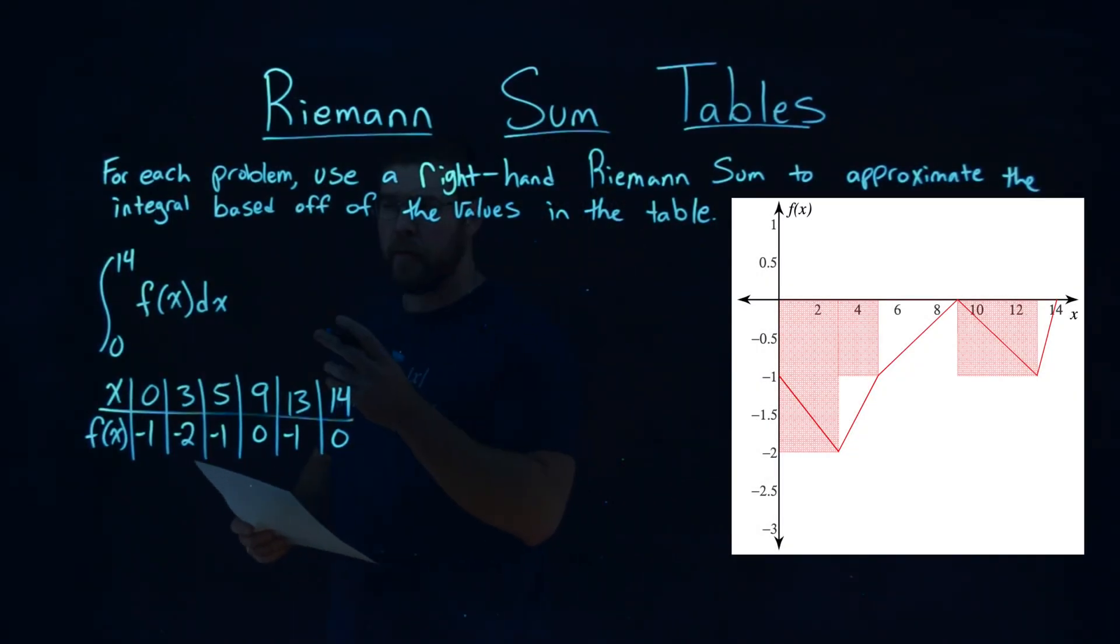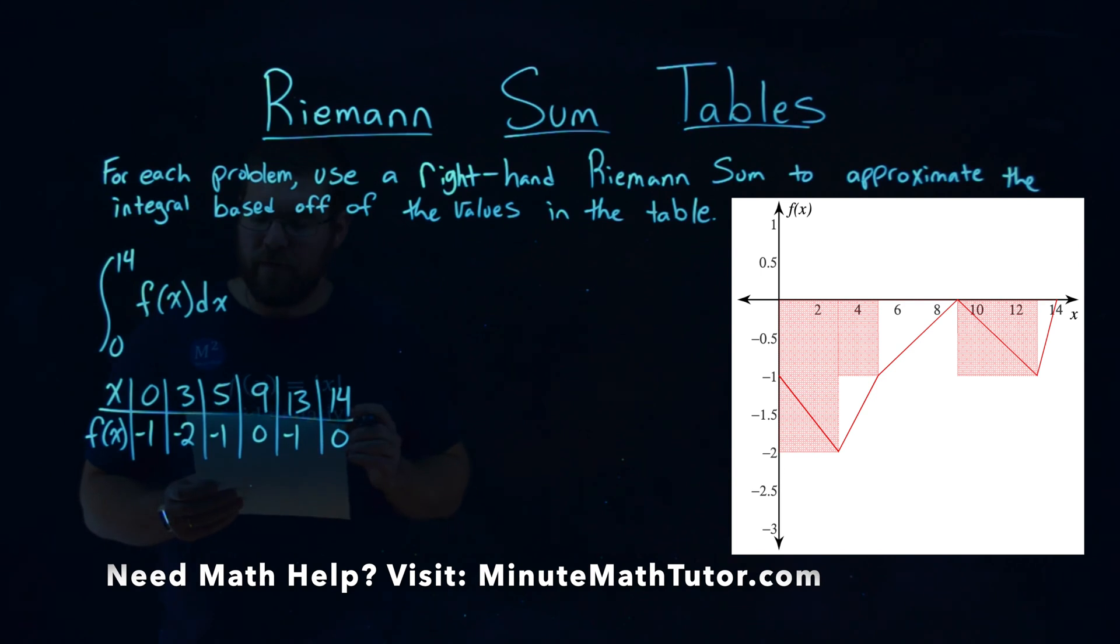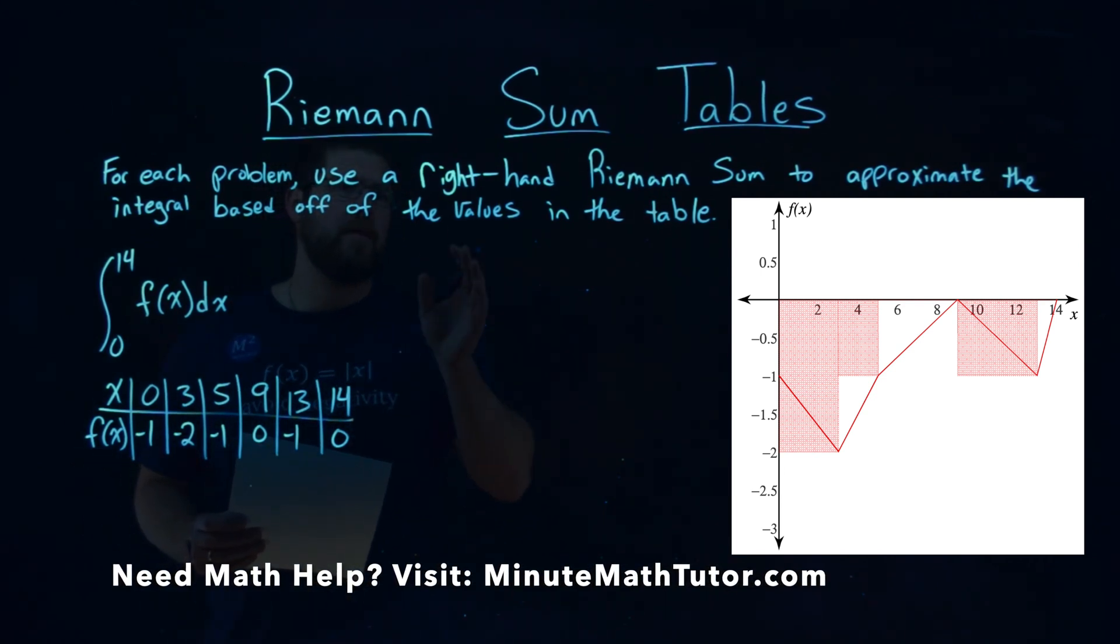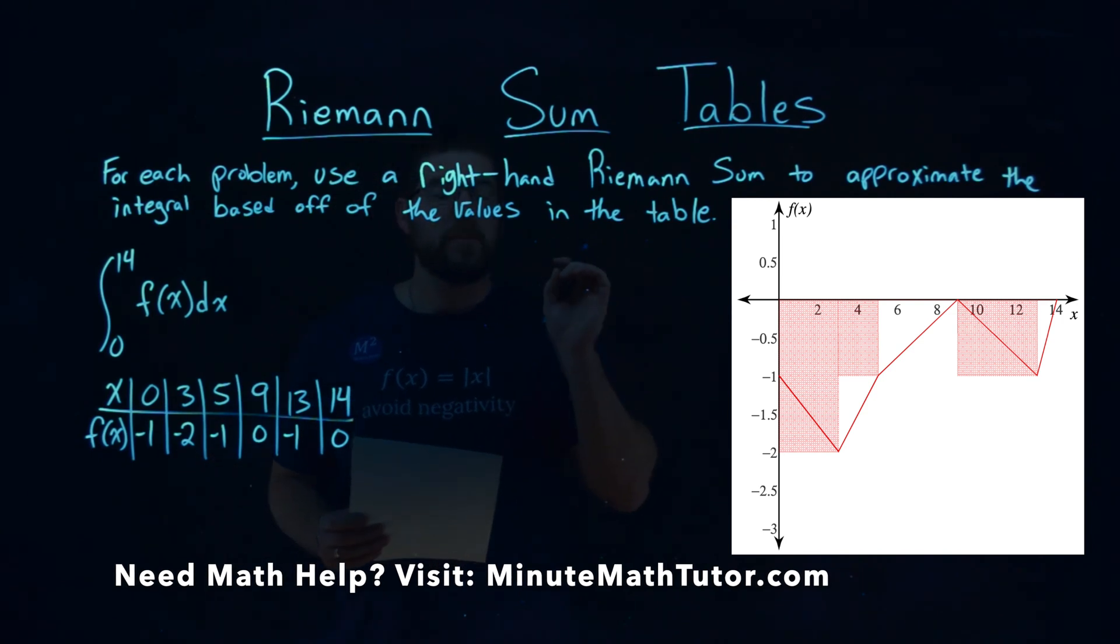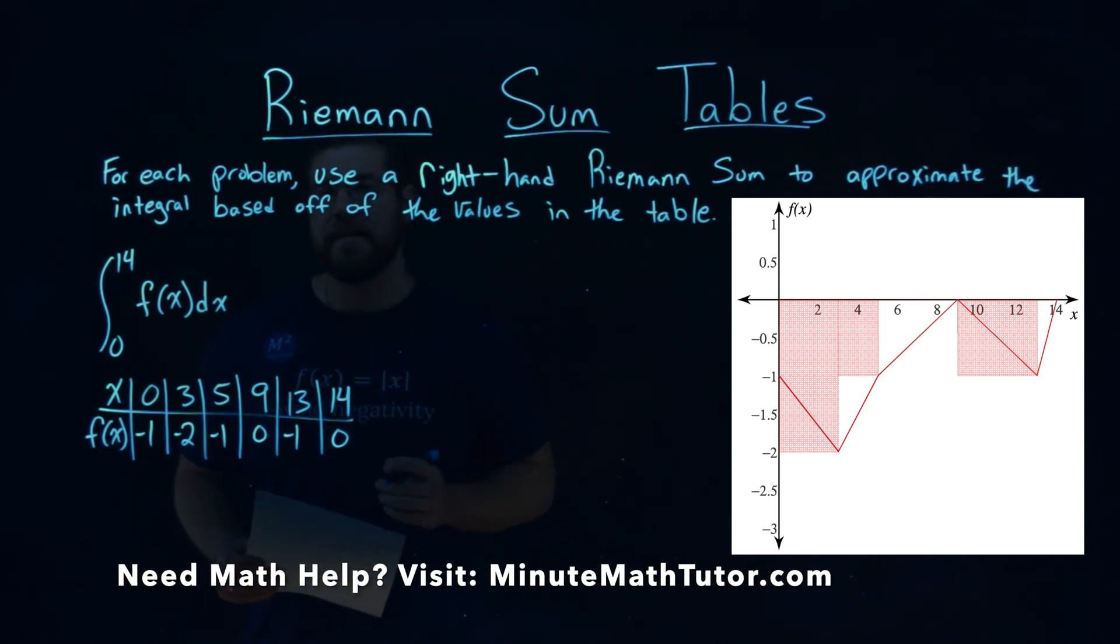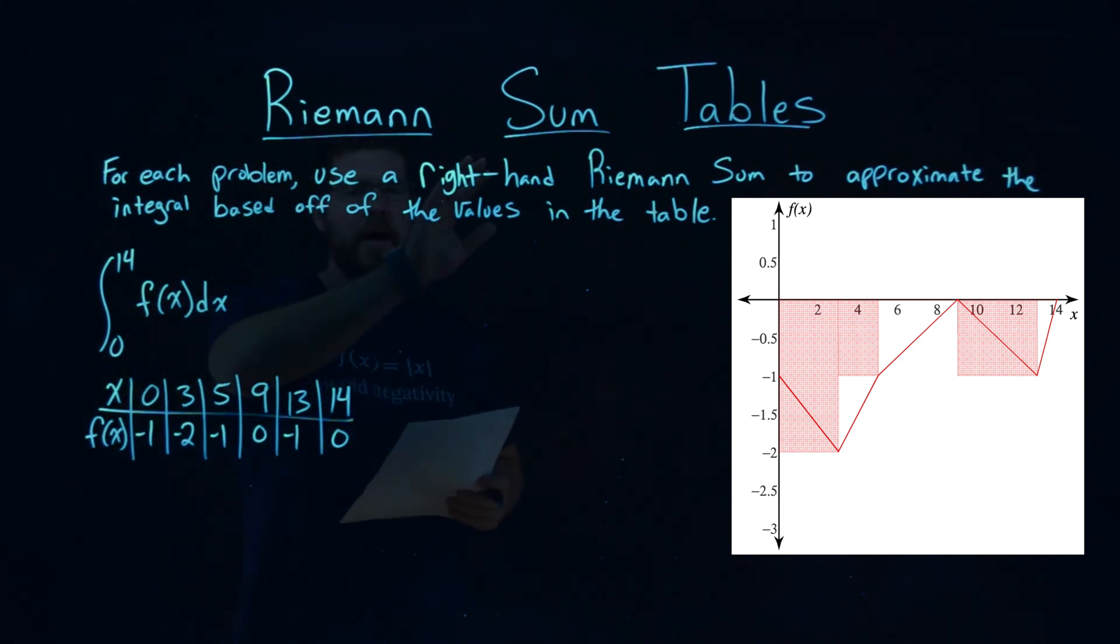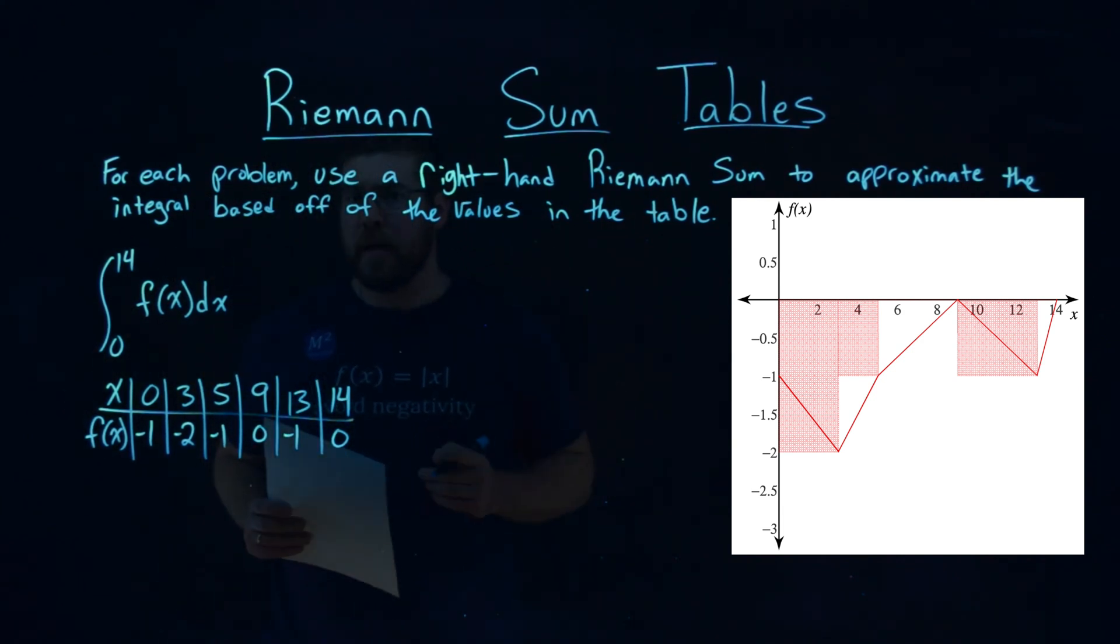We're given this problem right here, the integral from 0 to 14 of f of x dx, and we're given a table below. We need to find the right-hand Riemann sum to approximate the integral based off that table below. So they first tell us the right-hand Riemann sum. Got to keep that in mind.